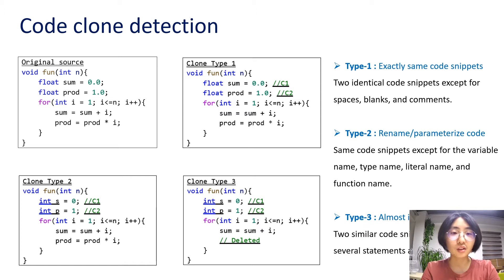They are the difference between the source code. The type 1 clone can be understood as exactly the same code snippets. As you can see in the figure, two additional comments have been added to the type 1 clone sample, and the other contents have not changed. The type 2 clone can be understood as renamed code. As you can see in the figure, the type of variable s and p have changed from float to int. Type 3 can be regarded as almost identical code snippets. In the figure, in addition to changes in variable types and changes in comments, some statements have been deleted.